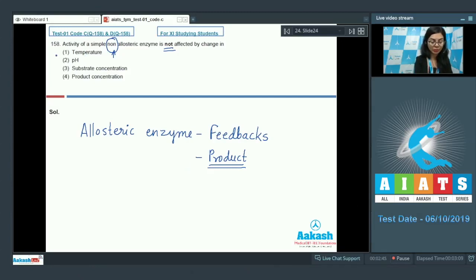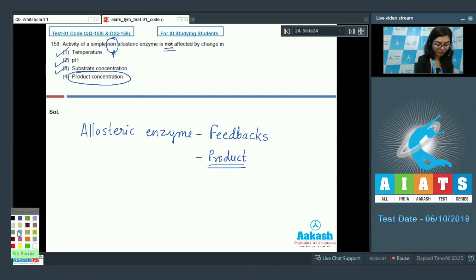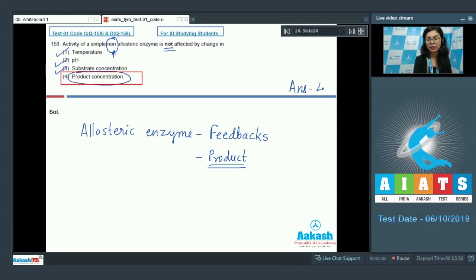Let's look at the options. First, temperature. Temperature would play a role in the activity of the enzyme. pH as well, and substrate concentration as well, just like any other enzyme activity. But product concentration would not be playing any role here since it's a non-allosteric enzyme. Thus, the right answer would be option number 4, product concentration. Answer is 4.